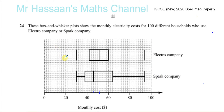A box and whisker plot is a visual representation of some important pieces of the data. There are five vertical lines that you see, which represent five different particular values. The line furthest to the left is basically the lowest value in all the data — that's the lowest cost. Both of them had the same lowest cost, which was 30.